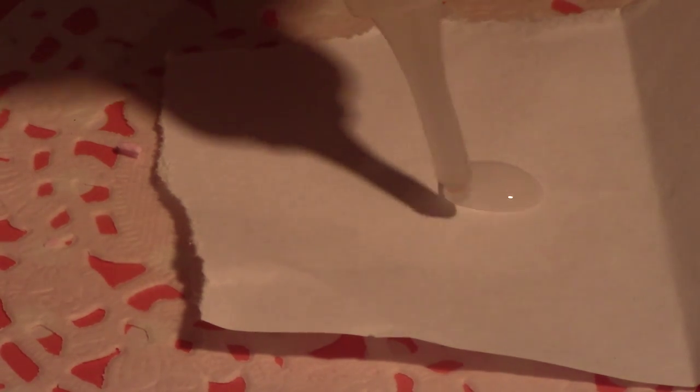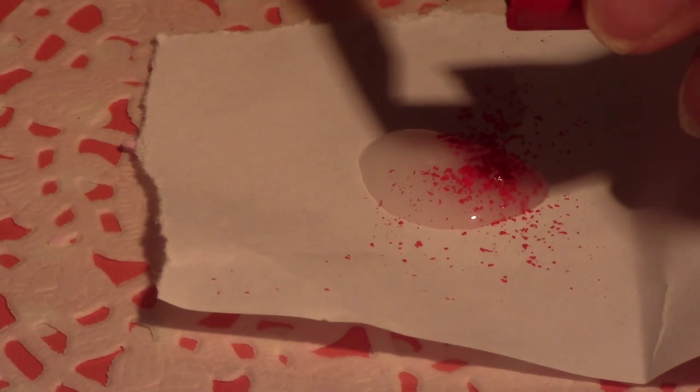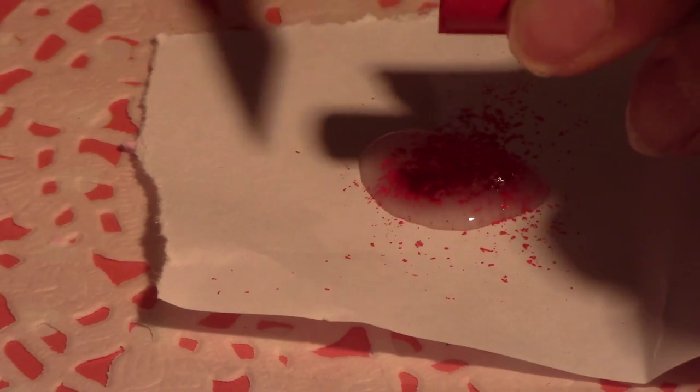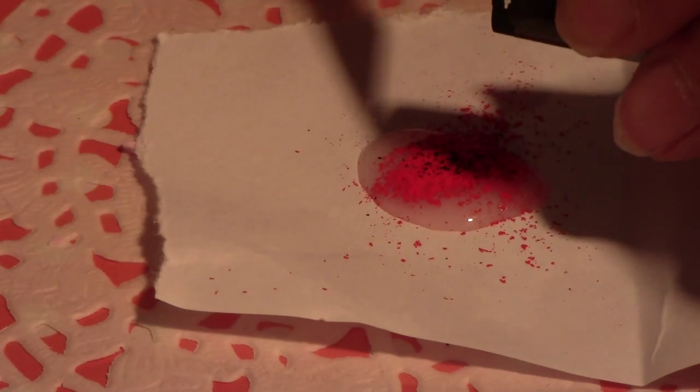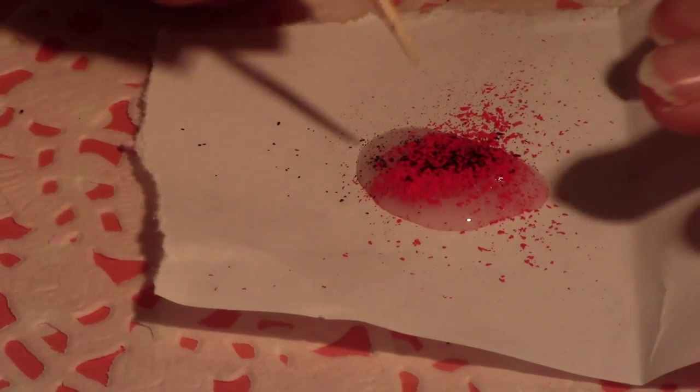Then I poured a small puddle of liquid Fimo to make the fake blood. I grated a lot of red pastel afterwards to have a quite opaque result. I added to this red pastel a bit of black pastel to obtain a darker red. I find the color is more realistic for making blood.